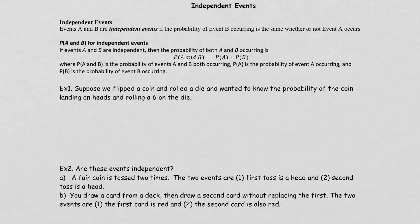Today's lesson, we're going to talk about independent events. An independent event is when two events are not related — in other words, one event is not getting affected by the other event. In that case, we find the probability of event A and event B, which is shown by the probability of A times the probability of B. So you multiply the probabilities if the events are independent.